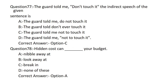The guard told me, 'Don't touch it.' What is the indirect speech? Option A: The guard told me do not touch it. Option B: The guard told me don't ever touch it. Option C: The guard told me not to touch it. Option D: The guard told me not to touch it. Option C is the correct answer — The guard told me NOT TO TOUCH it.